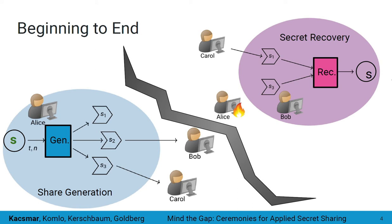Secret sharing constructions like a Shamir threshold scheme define two functions: share generation, depicted as the blue one on the left of the screen, and secret recovery, the pink one on the top right. In this work, we include these algorithms as stages, as well as including everything in between them and the functionality that can occur before share generation and after secret recovery in our analysis.